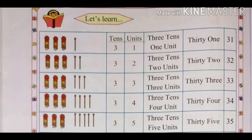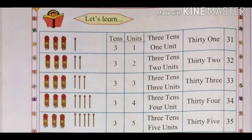Three bunches of math sticks means 30 math sticks. With 2 math sticks: 32. That is 3 tens and 2 units — 32. The spelling of 32 is T-H-I-R-T-Y (30) T-W-O (2): 32.